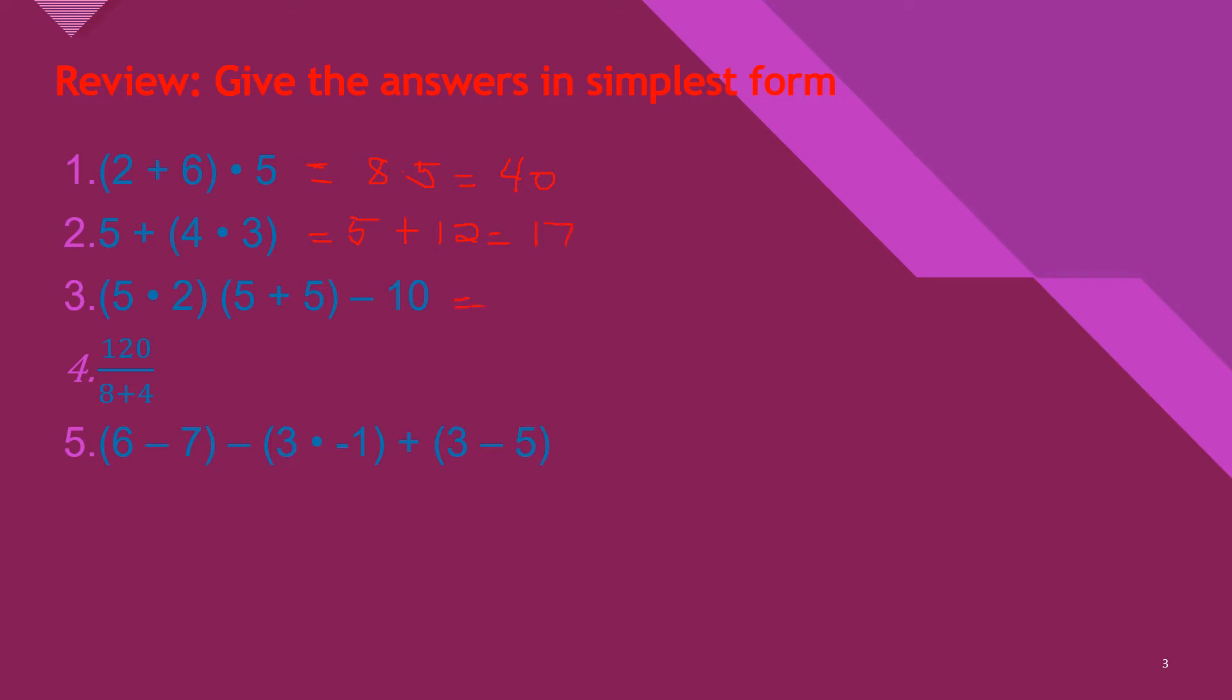Then we have 5 × 2 is 10, and then 5 + 5 is 10, minus 10. So 10 × 10 is 100, minus 10 equals 90.